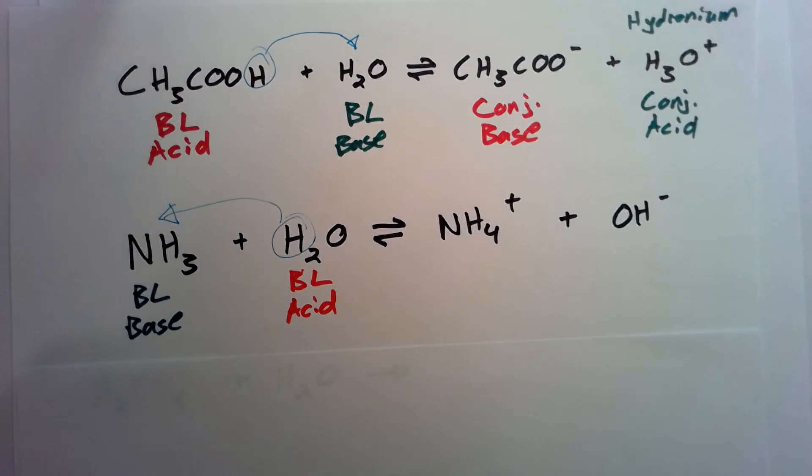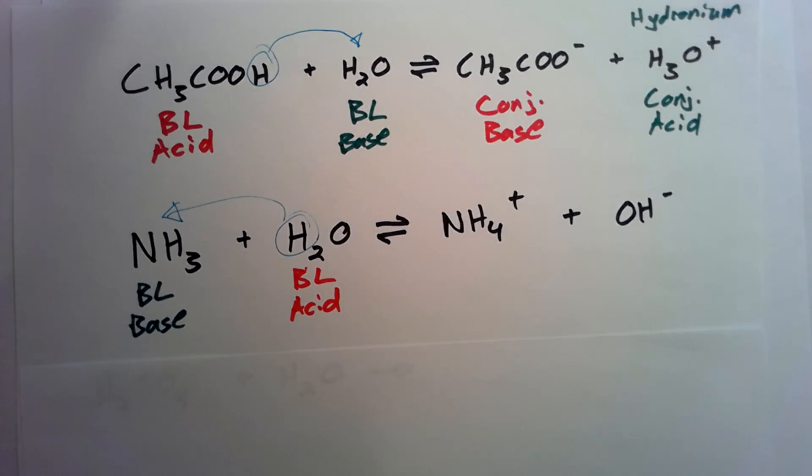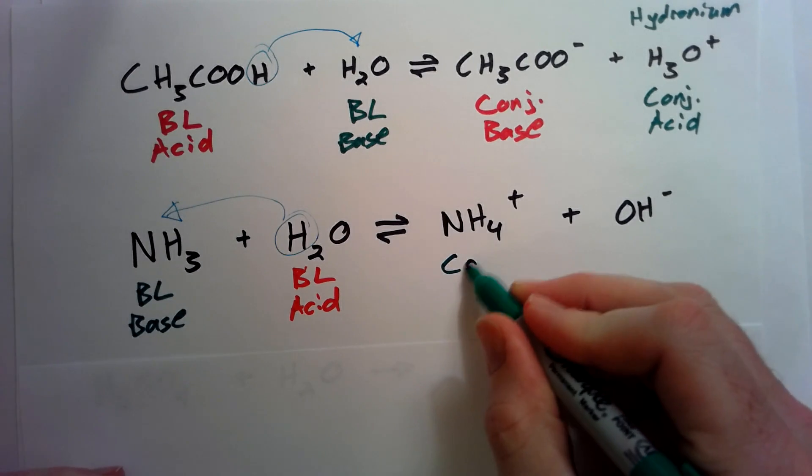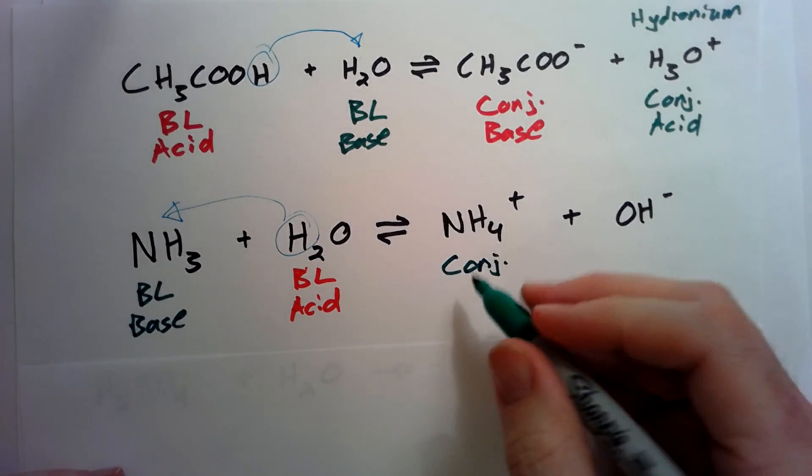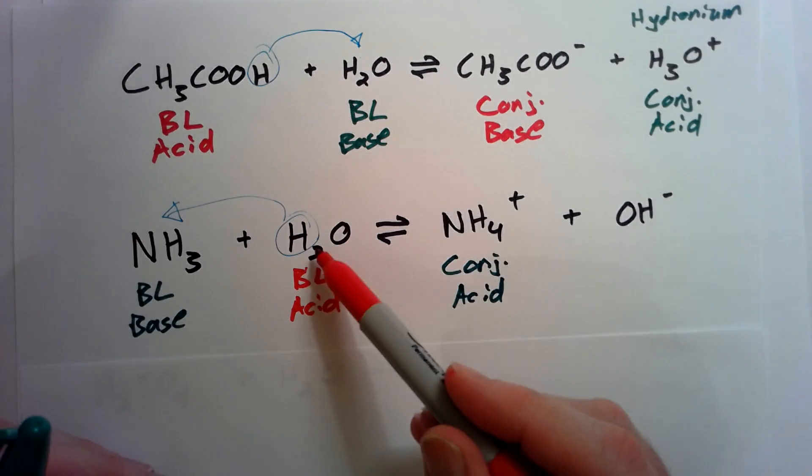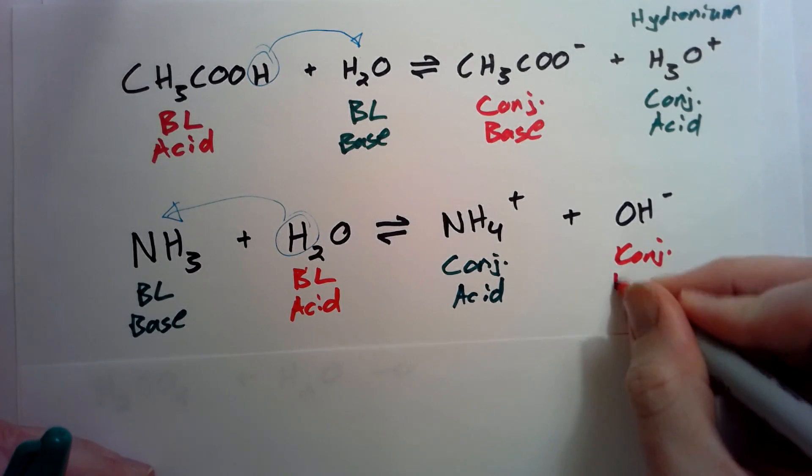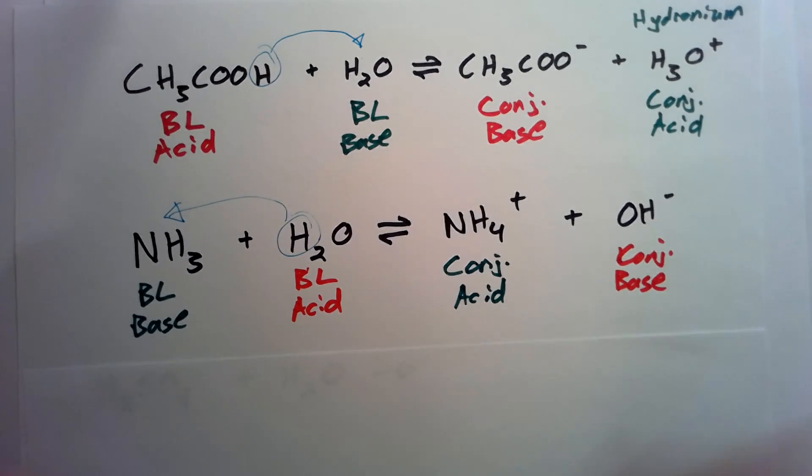So now what we can do is this Bronsted-Lowry base turned into the conjugate acid, and the Bronsted-Lowry acid turned into the conjugate base. Very good.